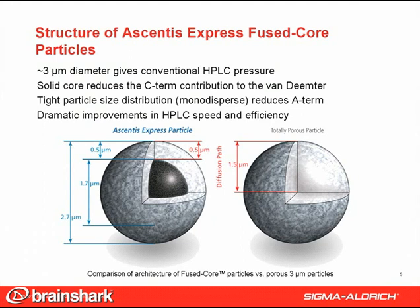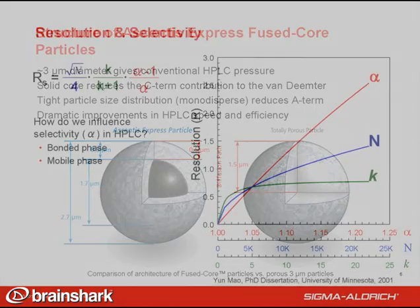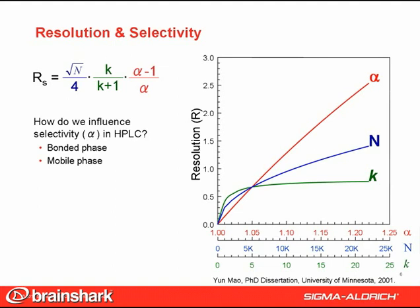There's another attribute not shown here. Fused core particles have a very tight particle size distribution, nearly monodisperse. This has A-term benefits. Although column efficiency is important, it's worth taking a few seconds to talk about selectivity to help explain the dramatic differences between the C18 and F5 column we just observed.